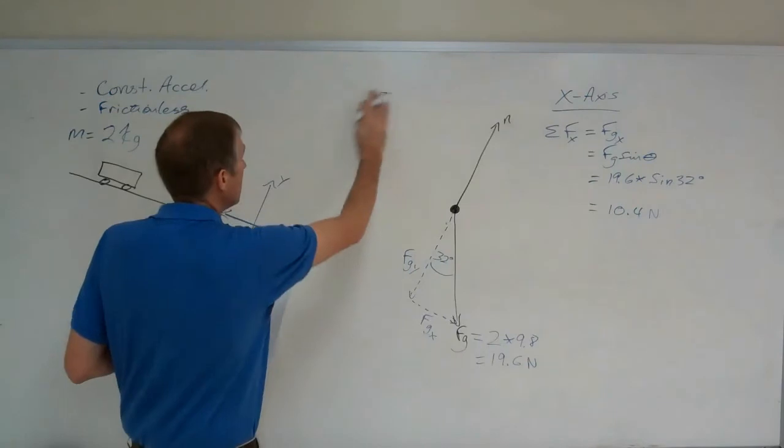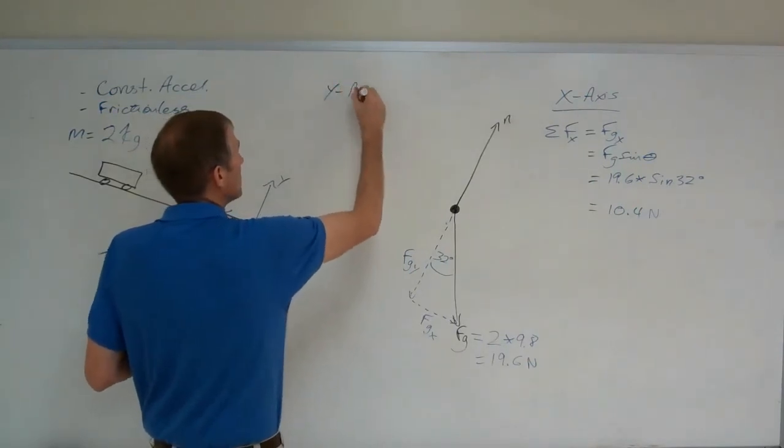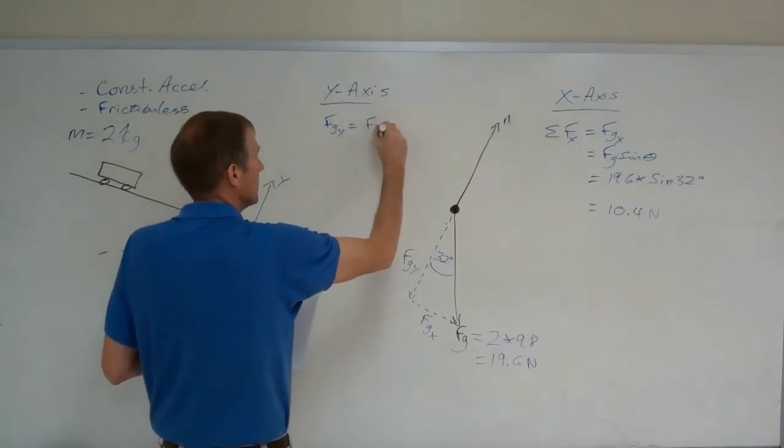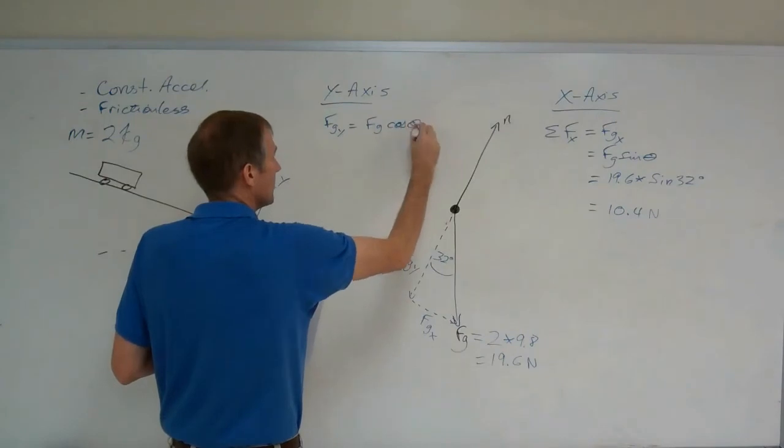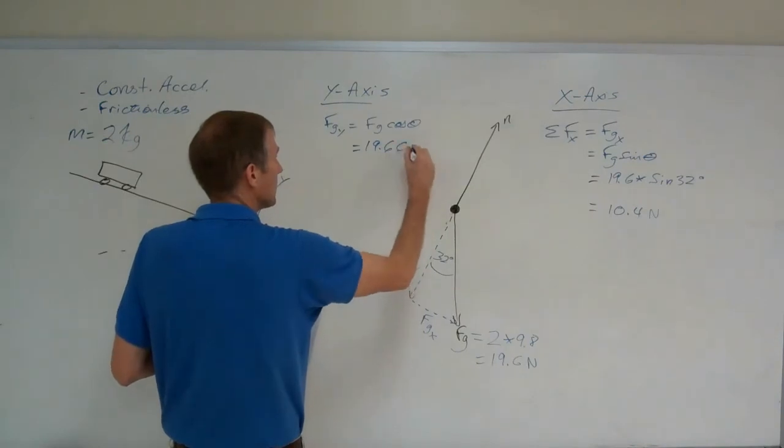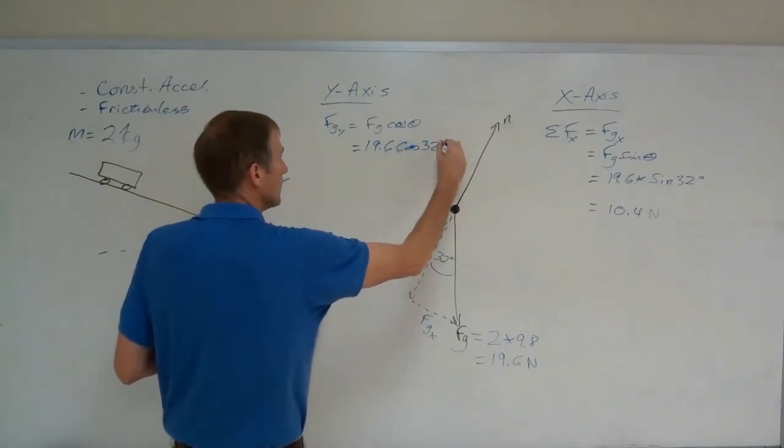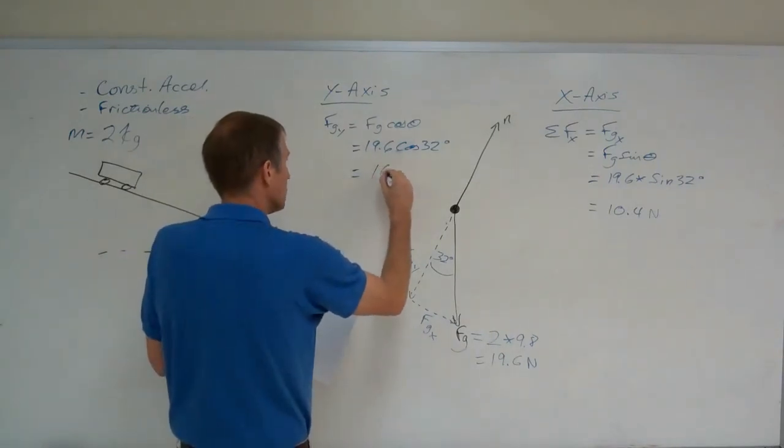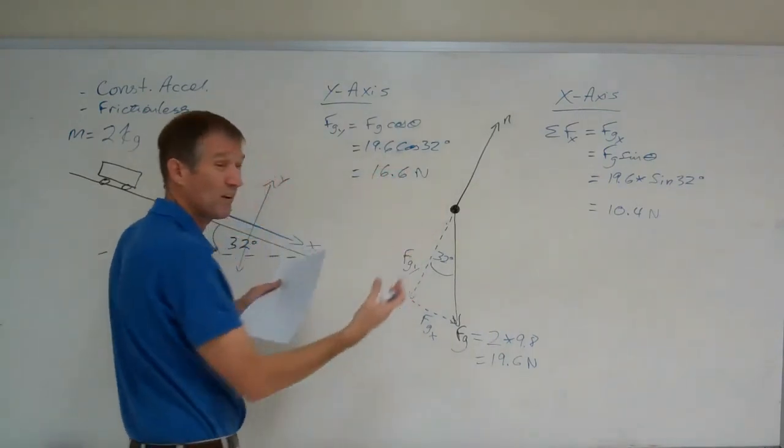By the way, in the Y axis, we'll need this later. FGY equals FG cosine theta, which is 19.6 times the cosine of 32 degrees, which came out to be 16.6 newtons. But we don't really need that.